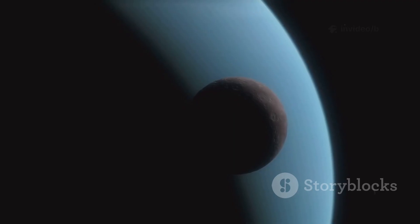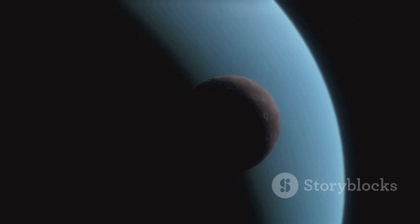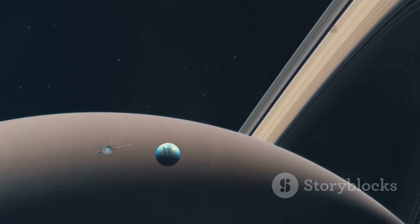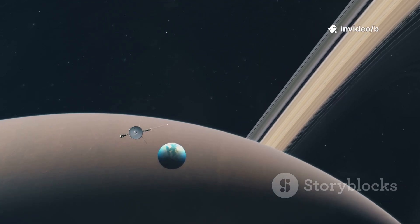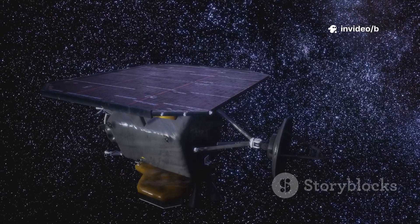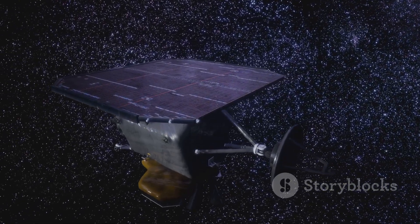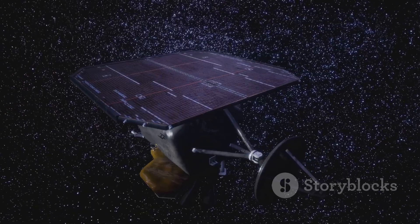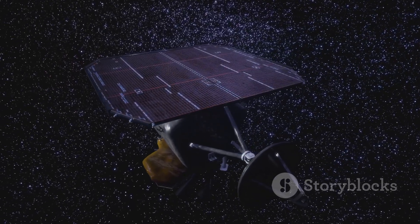Voyager 2 became the only spacecraft to visit Uranus and Neptune, unveiling their rings, moons and wild weather. After its planetary tour, it pressed on toward the edge of the sun's influence, the heliopause. In 2018, it crossed into interstellar space, joining Voyager 1 as humanity's farthest explorers.